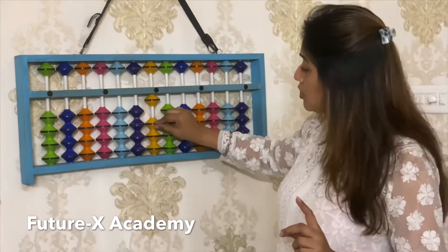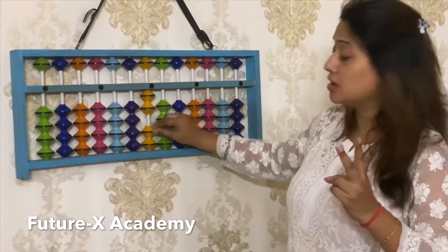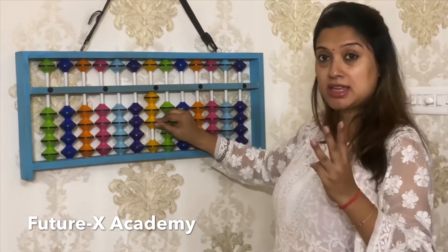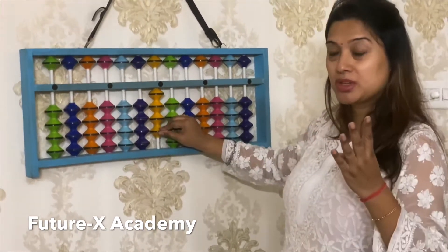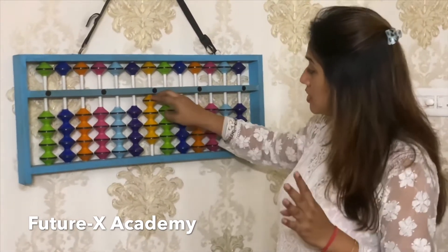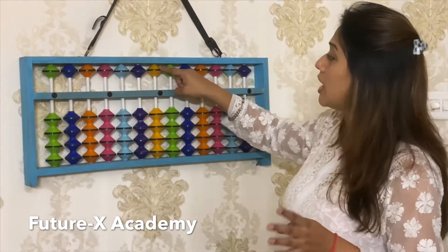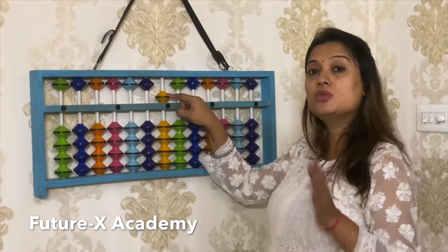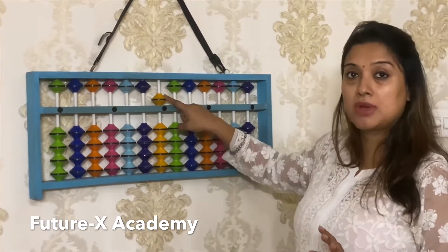Now one more bit, so the value is 2. One more, so it's 3. One more, so it's 4. All going down. Now the upper bit is touching here. As I said, the upper bit's value is 5. So now the abacus value is 5.